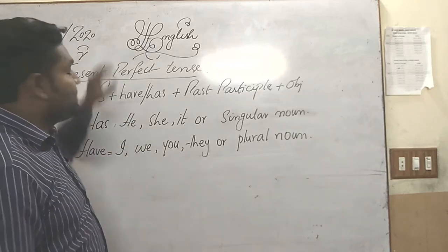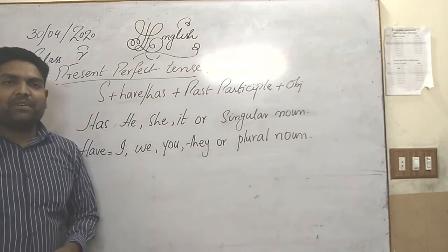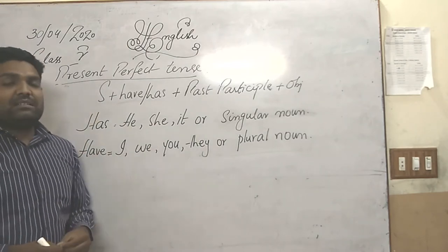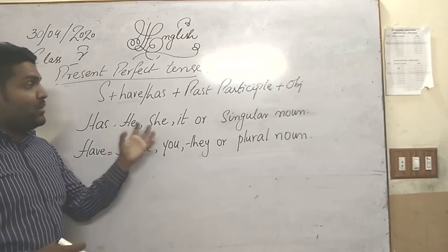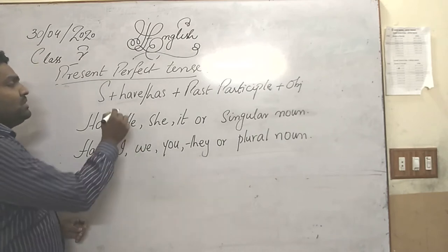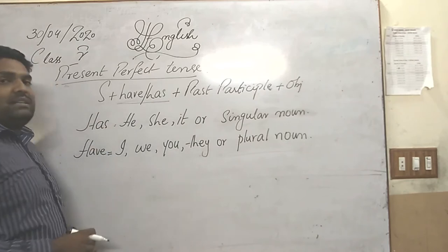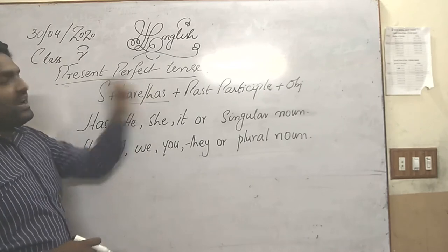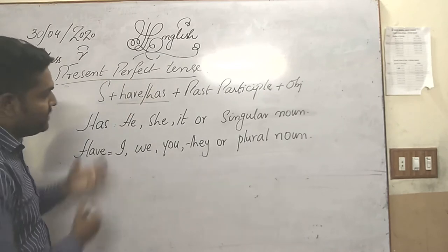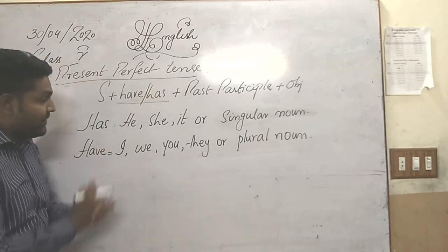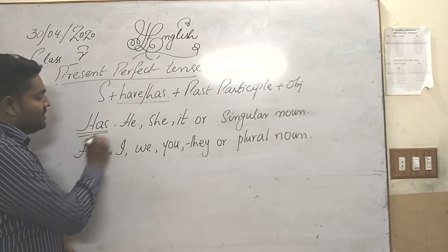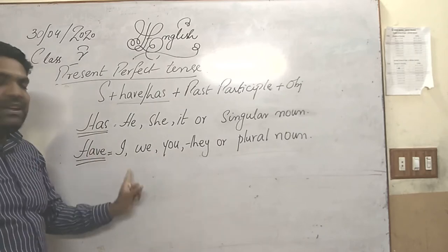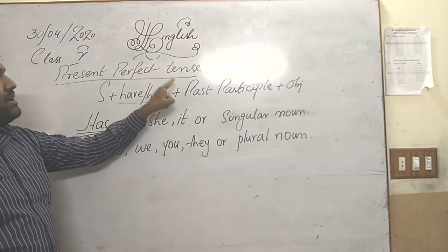Welcome, today we are going to study about present perfect tense. First of all, let's discuss about present perfect tense. We are going to study about the use of helping verbs, which are 'has' and 'have', which we use in present perfect tense — what is the correct use and where we have to use them. We use 'has' and 'have' as helping verbs in the present perfect tense.